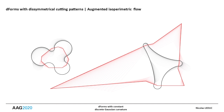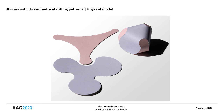Finally, we show here the implementation of this augmented isoperimetric flow. It exhibits the evolution, over time, of the two cutting patterns of a family of disymmetric D-forms with constant Gaussian curvature.